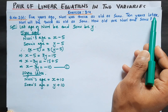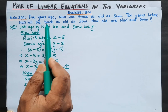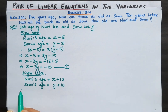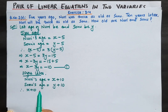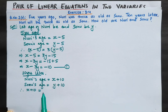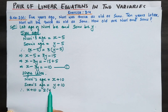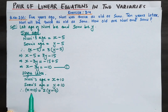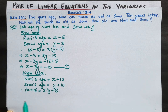According to the question, 10 years later Nuri will be twice as old as Sonu. That means Nuri's age, which is x plus 10, will be twice Sonu's age, which is 2 times y plus 10. So x plus 10 equals 2 into y plus 10.